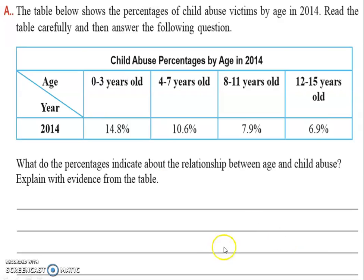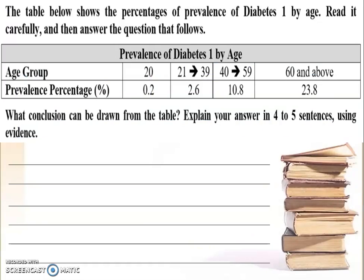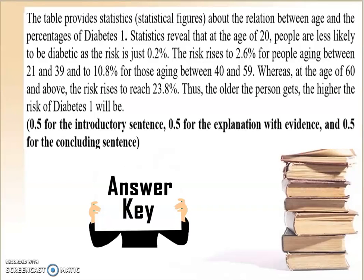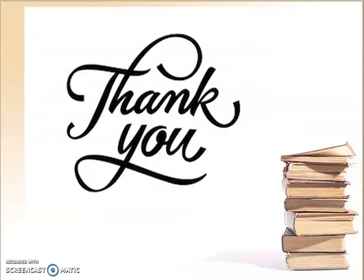Now it's your turn. The question asks: what do the percentages indicate about the relationship between age and child abuse? You have percentages, age groups, and years. Follow the three steps: introduce, explain or analyze the numbers, and end with a conclusion. Try to pause the video, read the numbers, and make your own conclusion. That's it for today, thank you.